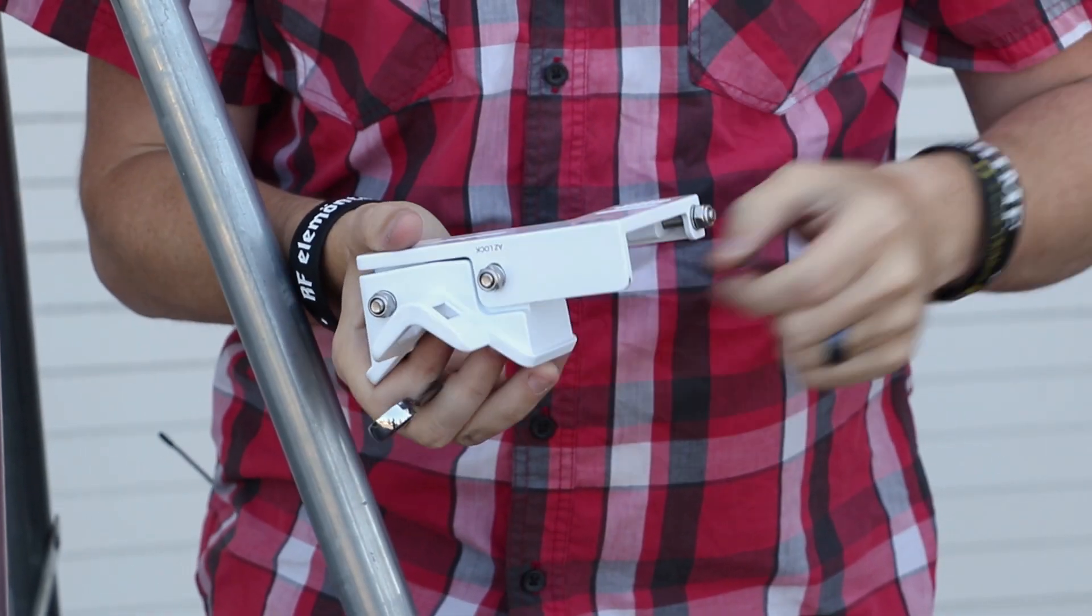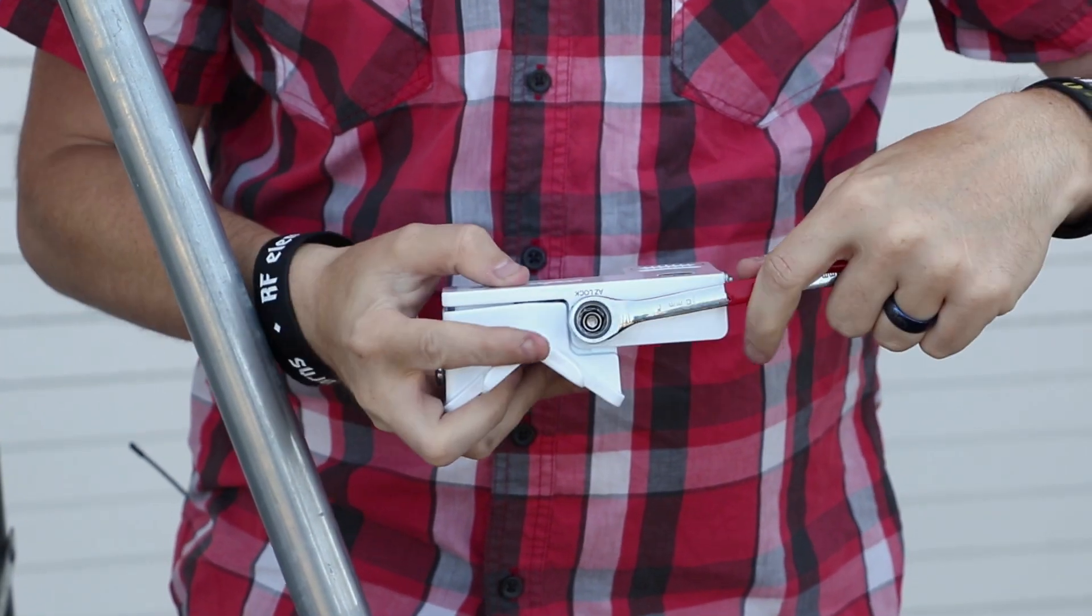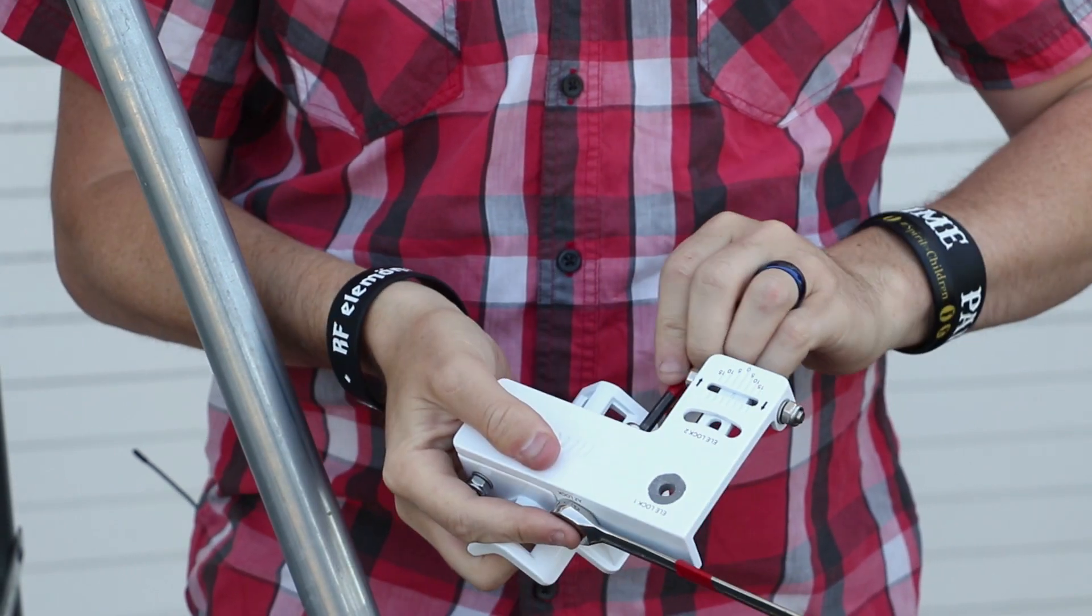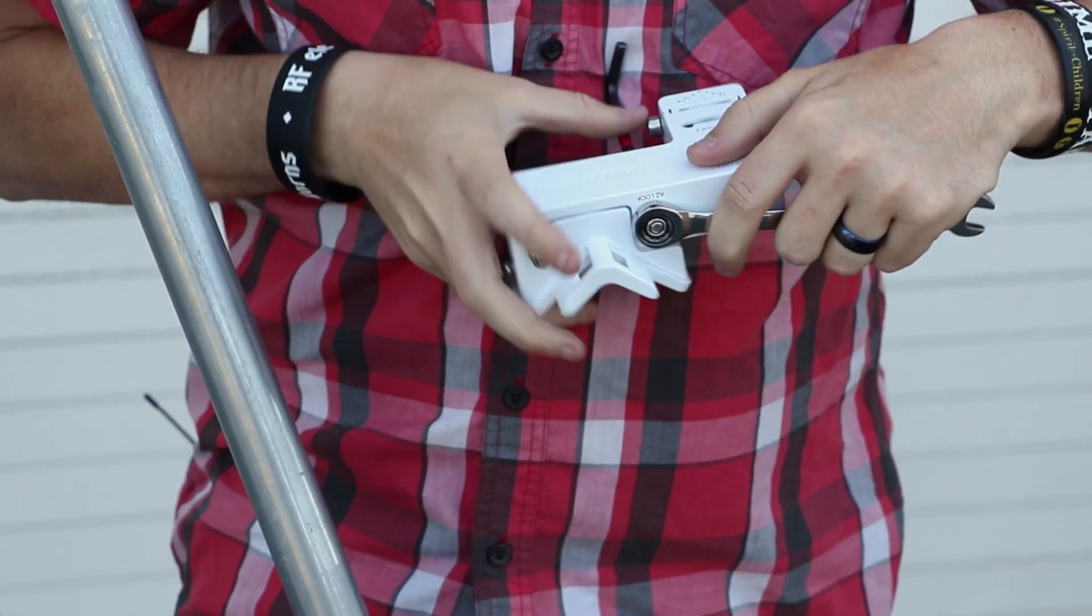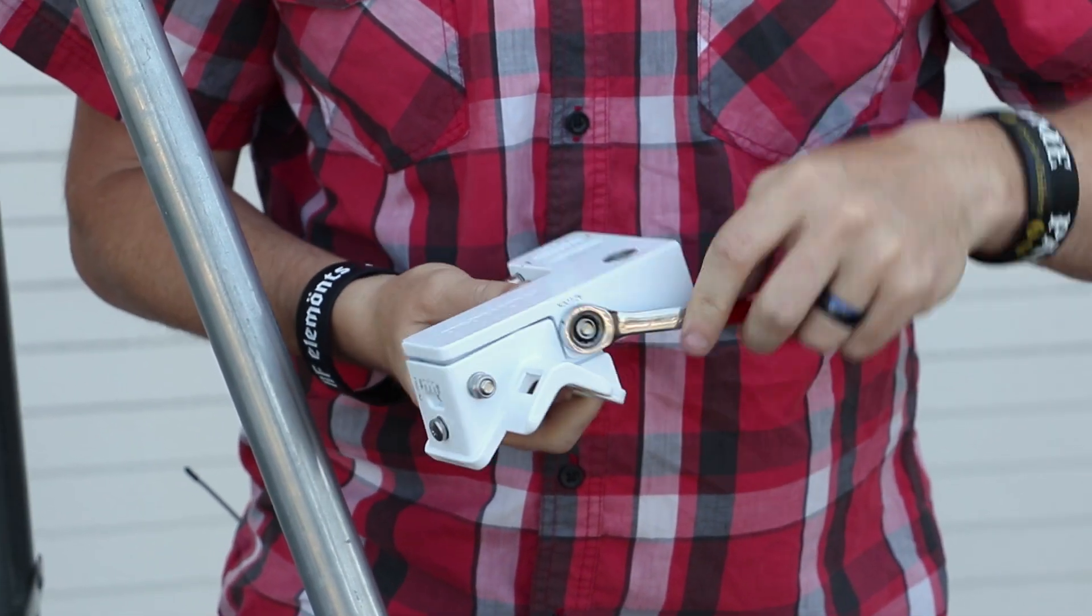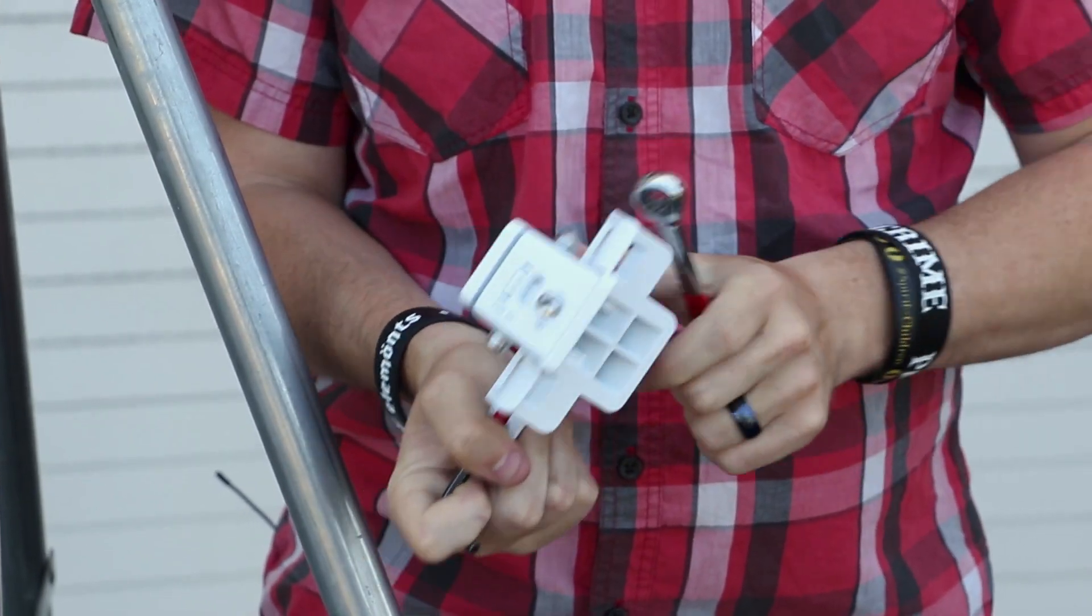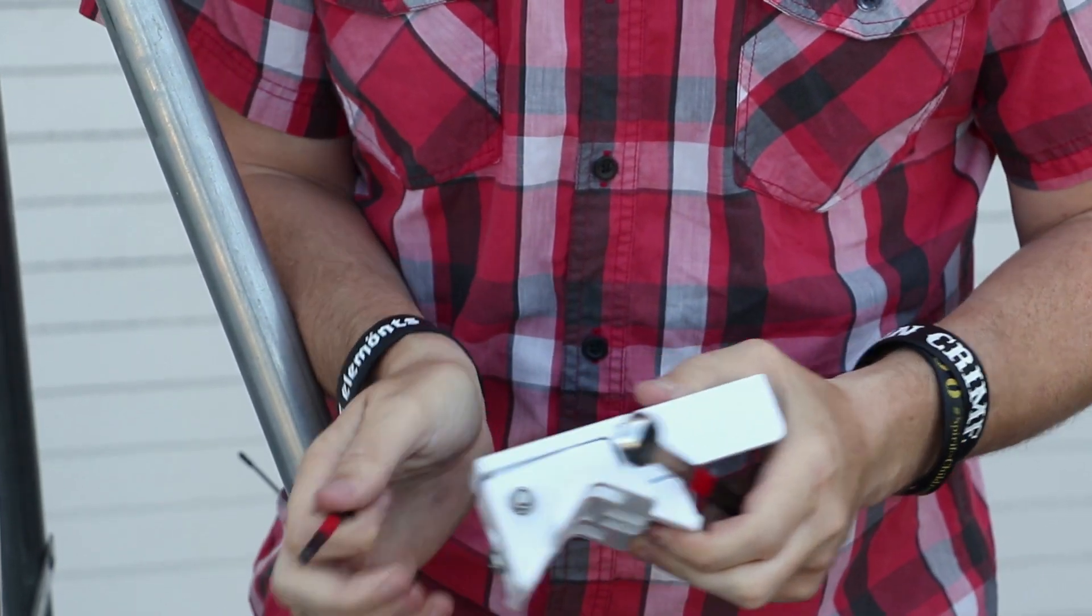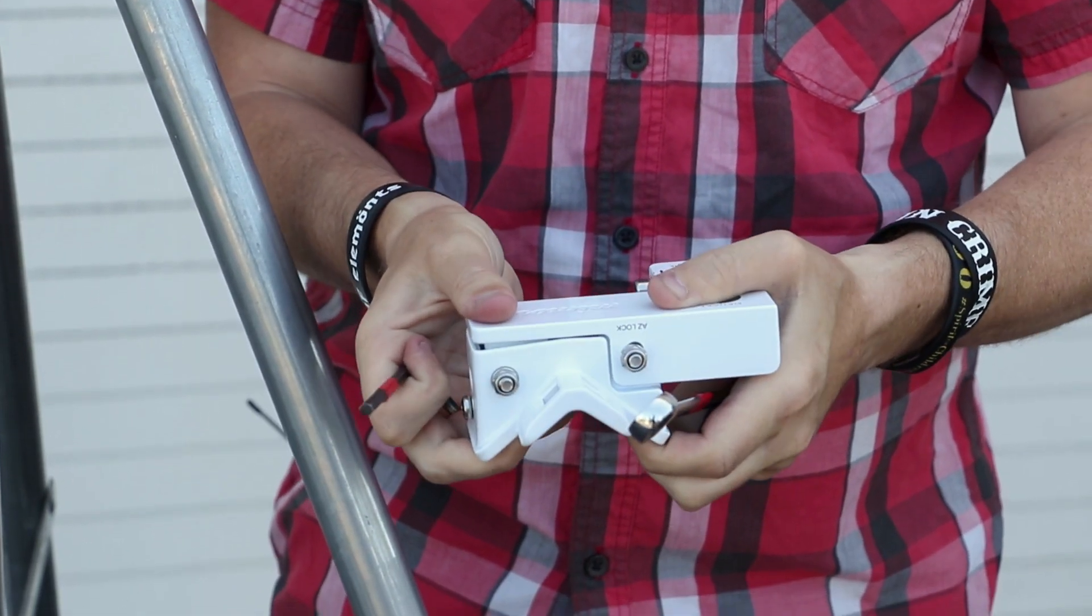So you need your Allen wrench and your 10 millimeter. So let's go ahead and stick our Allen wrench in here. And we're going to go ahead and tighten this down. And once you tighten it down, it doesn't move anymore. It's solid.